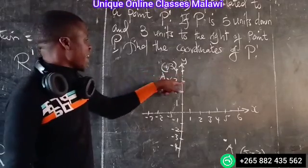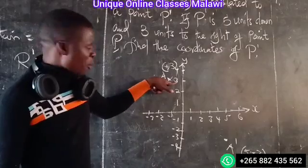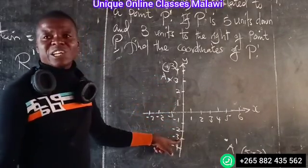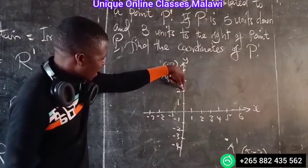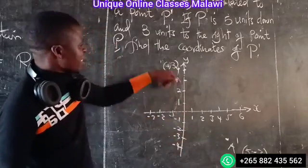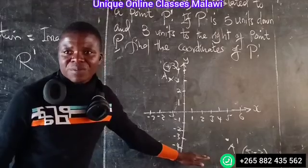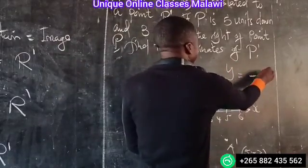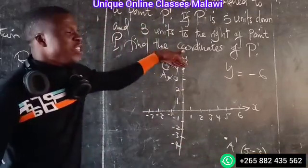So we step one, two, three, four, five, six — so it's like 6 units down. That's why when you go down, it's negative 6. That's 6 units down.